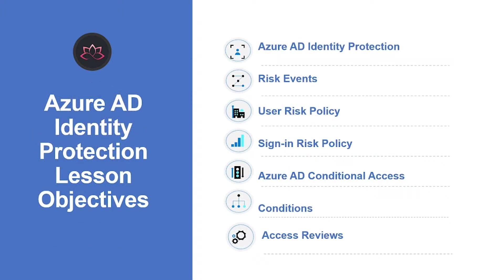Let me show you on a high level what are the topics we are going to touch on in this video. We will start with what is Azure AD Identity Protection, how can you access these risk events and how can you define the user risk policy and sign-in risk policy. We will dive deep into Azure AD Conditional Access and how you can set up your own CA, what are these conditions and where are they applied. And finally, we finish off with Access Reviews.